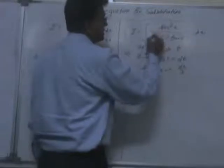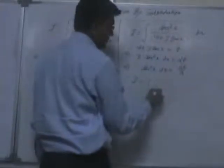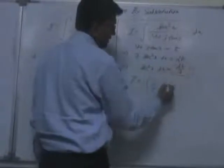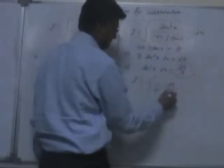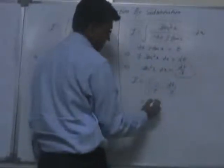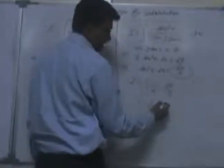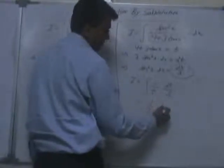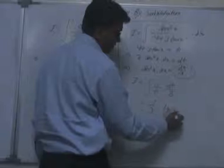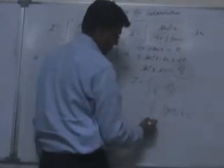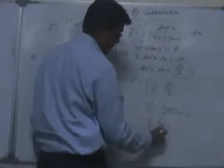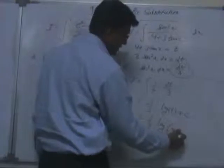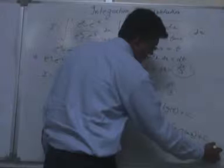So our original integration becomes: in place of (4 plus 3·tan(x)) we write t, and in place of sec²(x) dx we write dt over 3. So the integral becomes one over t times dt over 3. The constant one-third comes outside, giving us one-third integral of dt over t. This integrates to one-third log(t) plus c. Substituting back, the answer is one-third log(4 plus 3·tan(x)) plus c.